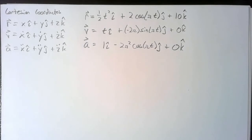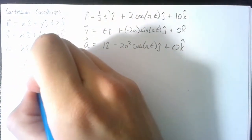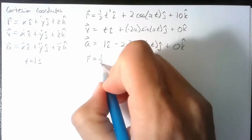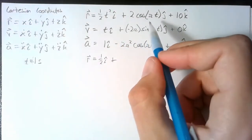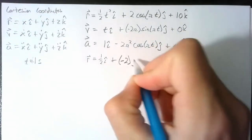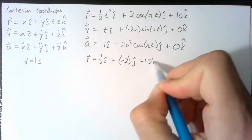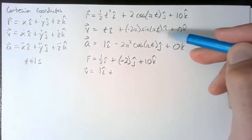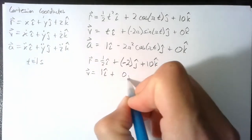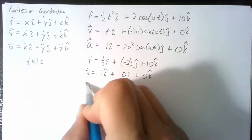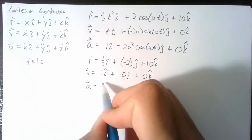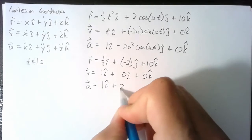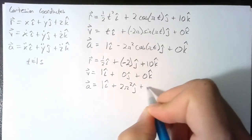Now we choose t = 1 second and plug in. Position: one-half i plus 2 cosine of pi — and cosine of pi is negative 1 — so negative 2 in the j-direction, and 10k. Velocity: 1 in the i-direction; sine of pi is 0, so 0 in j and 0 in k. Acceleration: 1 in the i-direction; cosine of pi is negative 1, giving plus 2π² in the j-direction, and 0 in k.